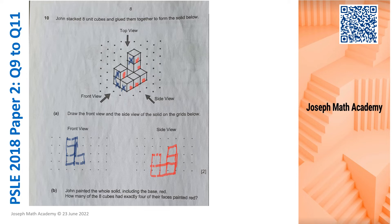Now I'm going to move on to part B. Part B, we know that John painted the whole solid structure, including the base. And we want to find out how many of the cubes had exactly four painted faces.